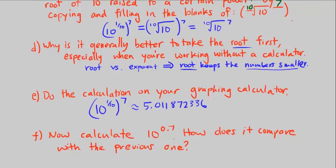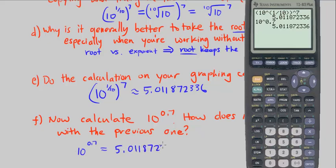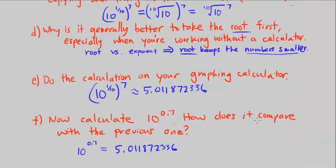Part F says to calculate 10 to the power of 0.7 on the calculator. Entering 10 to the power of 0.7, we get approximately 5.01187234. These are the same. So 10 to the power of 0.7 equals approximately 5.01187234 — exactly the same as Part E.